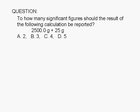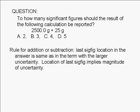To how many significant figures should the result of the following calculation be reported? 2,500.0 grams plus 25 grams. When adding or subtracting numbers, the location of the last significant digit in the answer must be the same as that in the term with a larger uncertainty.